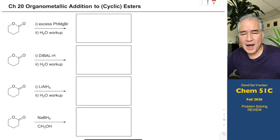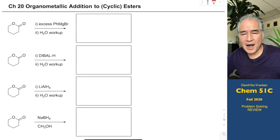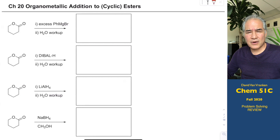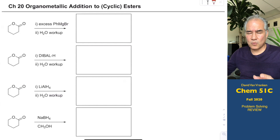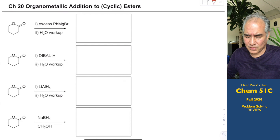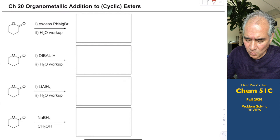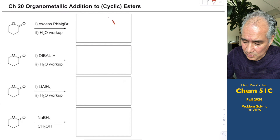These fill-in-the-box questions review some common reactions we covered related to Grignard chemistry and hydride reagents with esters, particularly cyclic esters. Throughout this quarter, people get confused when you have rings. A cyclic ester is referred to as a lactone. Grignard reagents add two equivalents to esters — you can't stop at one single addition, and you must follow with a workup. The reaction adds two phenyl groups where the ester was.